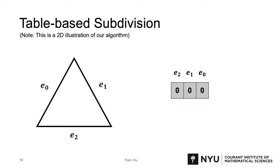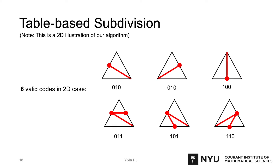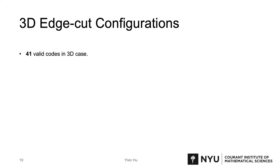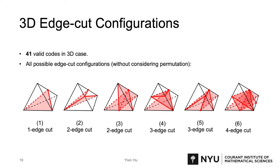Here we use a table-based method to get the new connectivity within the subdivided triangles. Since a triangle has three edges, we can use a three-bit code for indicating which edge is cut or intersected. If no edge is cut, the code value is zero. If edge E1 is cut, for example, the code value turns to 2. In the 2D case, there are six valid codes. One code may correspond to multiple ways of connectivity — in this case, we pick the one with higher geometric quality. While the 2D case is simple, the 3D case is more complex, and there are 41 valid codes. Without considering permutation, the edge cut configurations can be categorized into six groups. For more details, please refer to our paper.